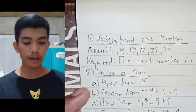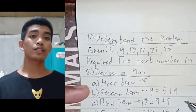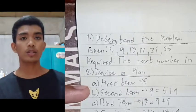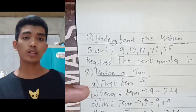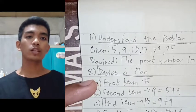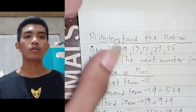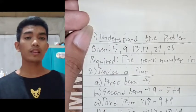By this plan that we have devised, we can find the next term in the sequence. So we will now proceed to the third step, which is to carry out the plan.